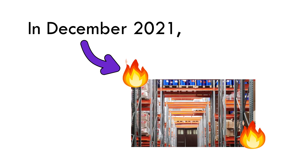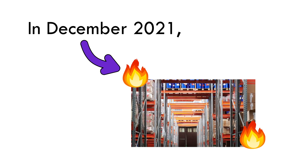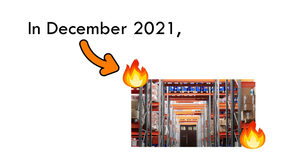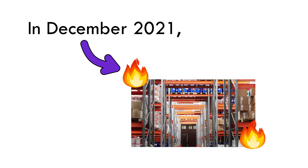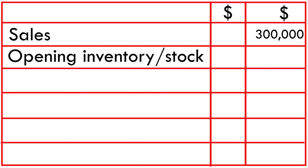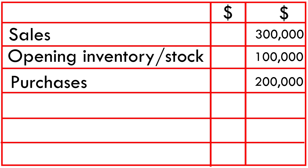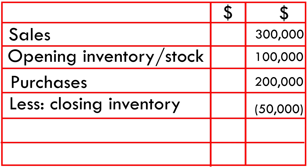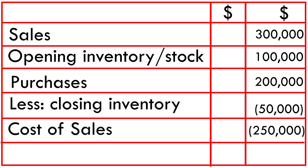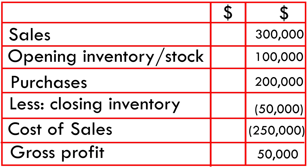In 2021, the entity's warehouse caught fire and some of the inventory and stock records were destroyed. Existing records indicate the following: sales $300,000, opening inventory $100,000, purchases $200,000, closing inventory $50,000 — giving a cost of sales of $250,000, and gross profit of $50,000. The question therefore is: what was the correct value of closing inventory?